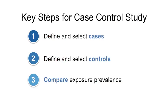There are three key steps in conducting a case control study. Step one: define and select the cases — cases are selected from a group that has the disease or health outcome of interest. Step two: define and select the controls — controls are the non-cases that are representative of the same source population that gives rise to the cases. Step three: measure and compare the exposure prevalence in the controls versus the cases.